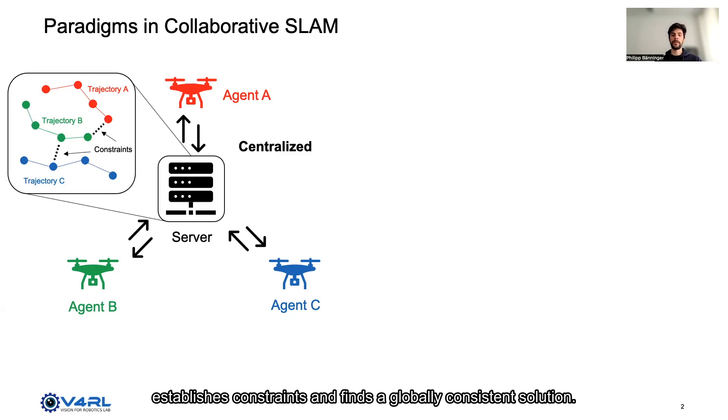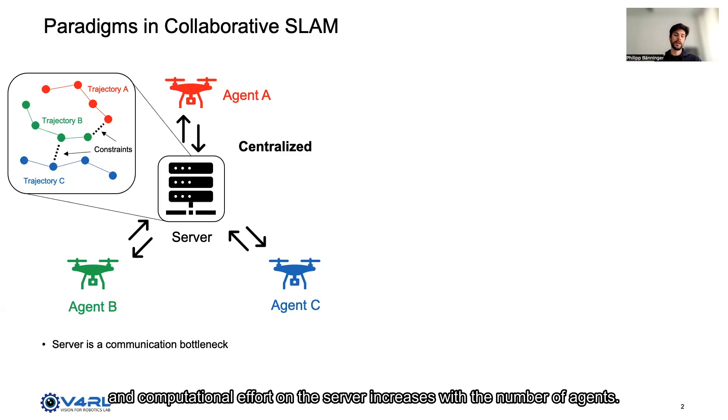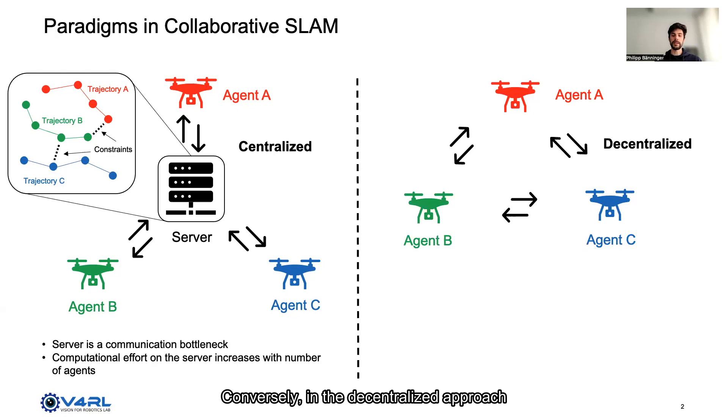However, the server is a communication bottleneck and computational effort on the server increases with the number of agents. Conversely, in the decentralized approach agents communicate peer-to-peer and computation can be distributed among the agents, making this approach more scalable.